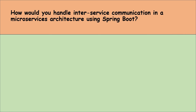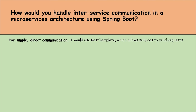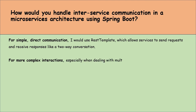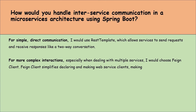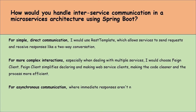How would you handle inter-service communication in a microservice architecture using Spring Boot? For simple direct communication, I would use REST template, which allows services to send requests and receive responses like a two-way conversation. For more complex interactions, especially when dealing with multiple services, I would choose FeignClient. It simplifies declaring and makes the code cleaner and the process more efficient. For asynchronous communication where immediate responses are not necessary, I would use message brokers like RabbitMQ or Kafka.